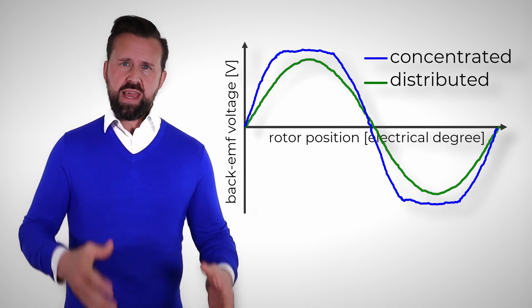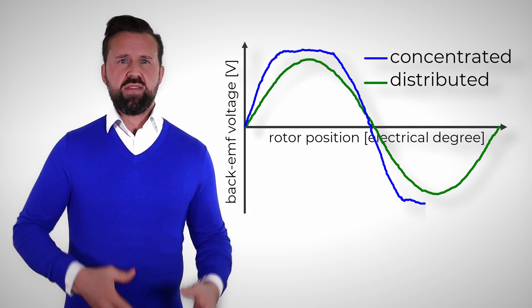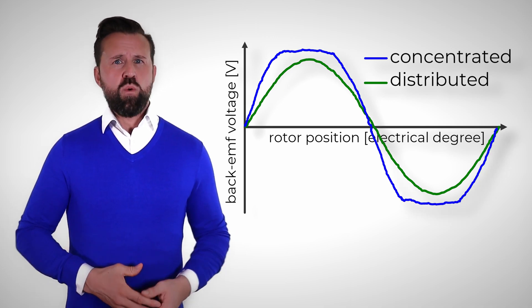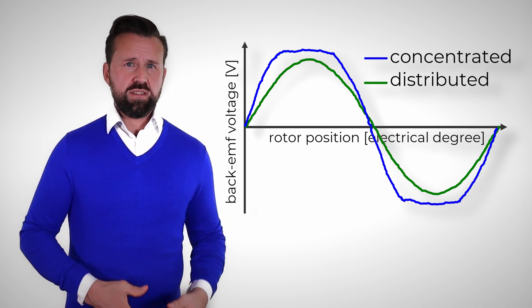On the other hand, the back EMF of the concentrated winding is rather in the shape of a trapezoid. What does this mean for the performance of the motor?